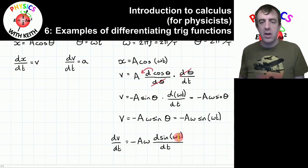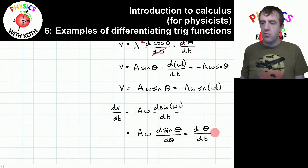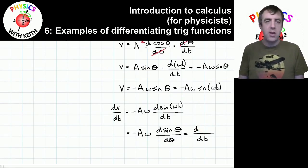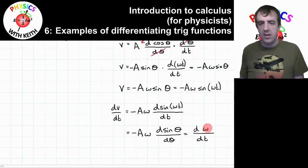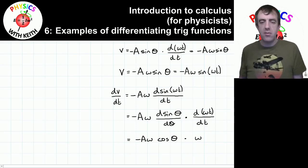Now we can differentiate that with respect to t to find what the acceleration is. We've got a functional again — omega t is a function of t, so sine of omega t is a function of a function of t. Not a problem, we can use the chain rule. I've written it in this form, knowing that omega t plays the role of the argument. There was a small mistake there which I've fixed.